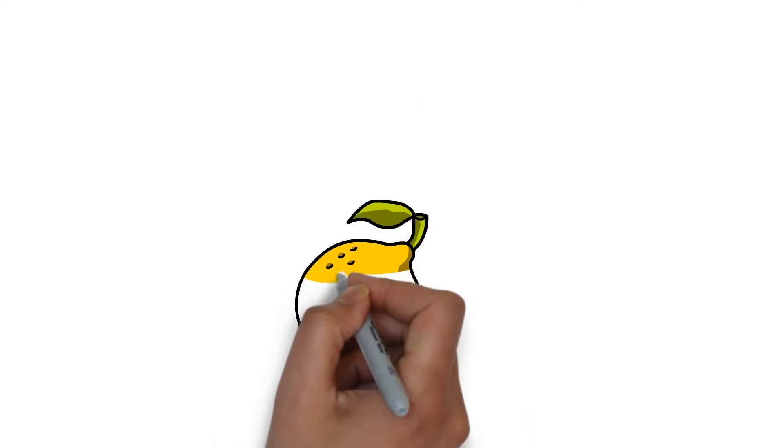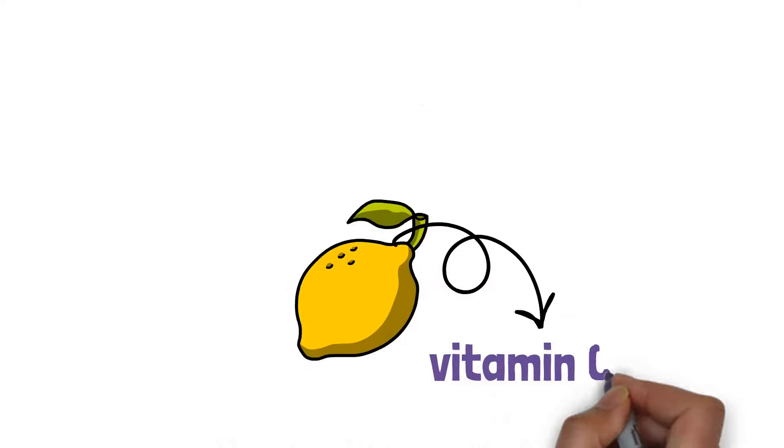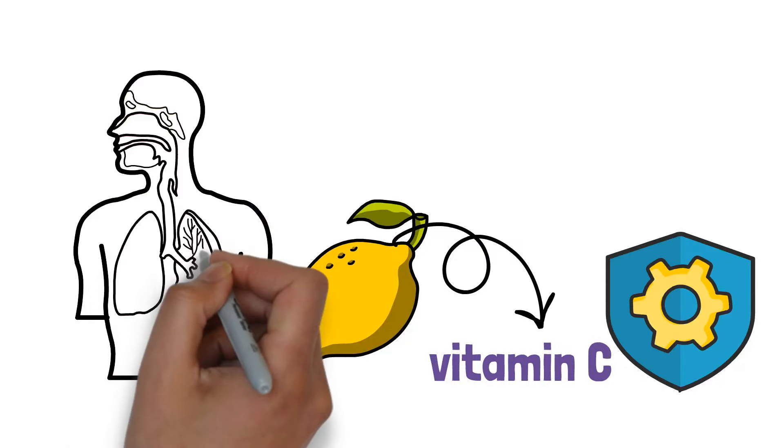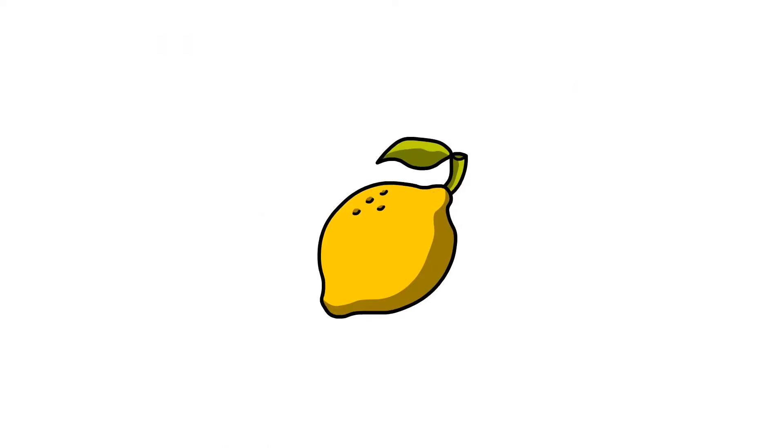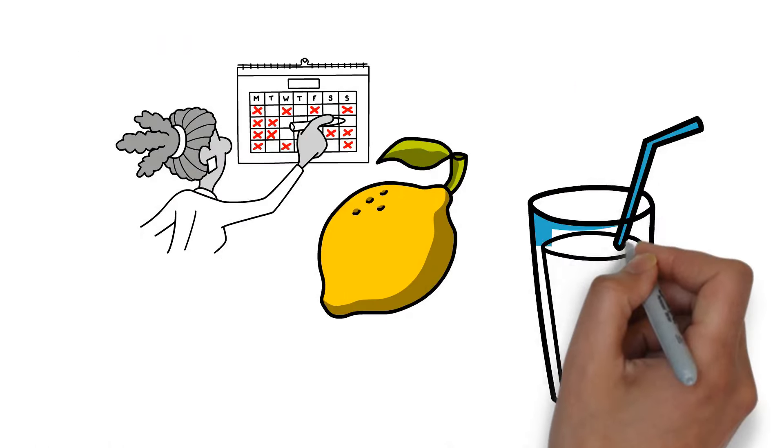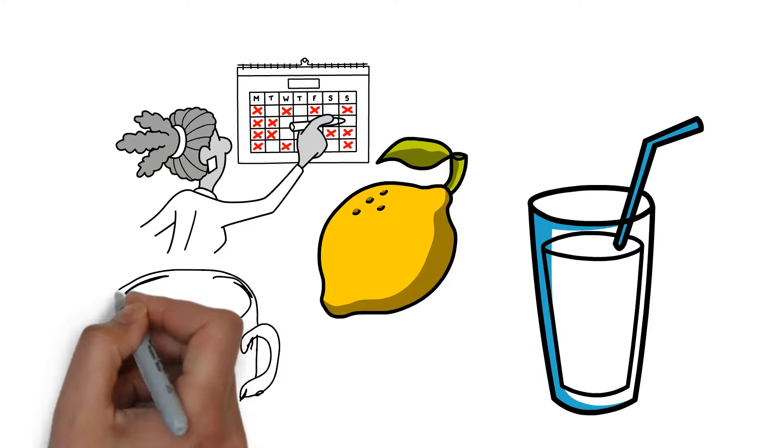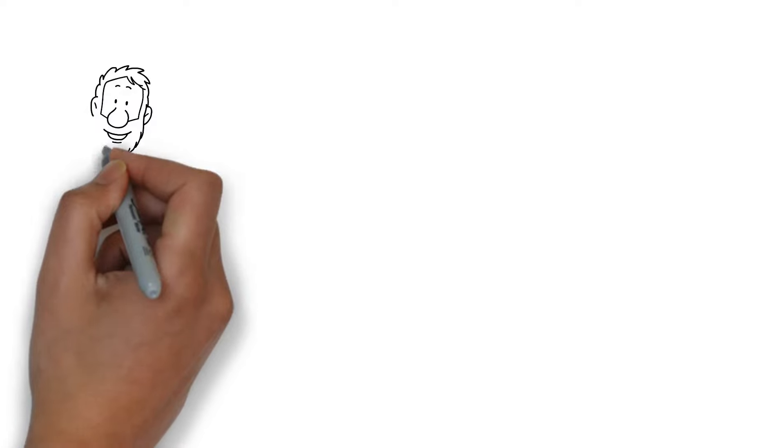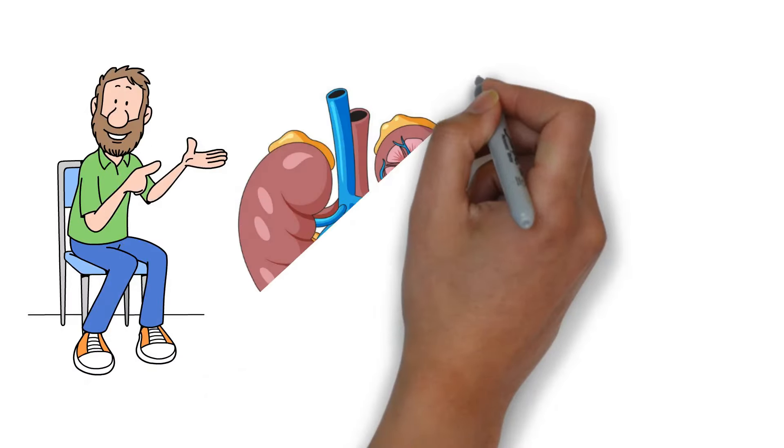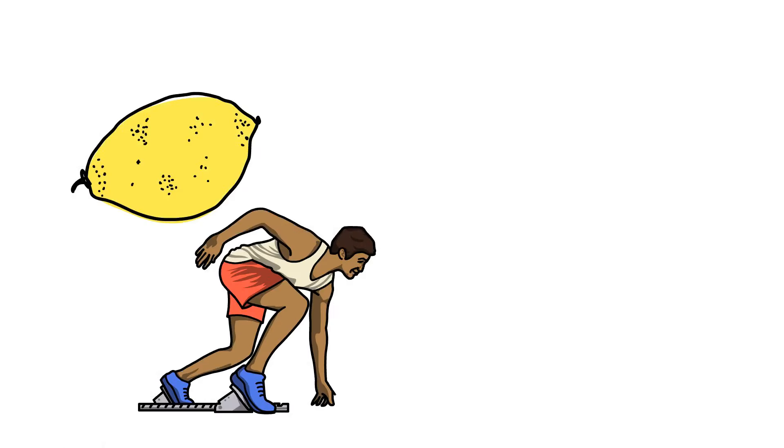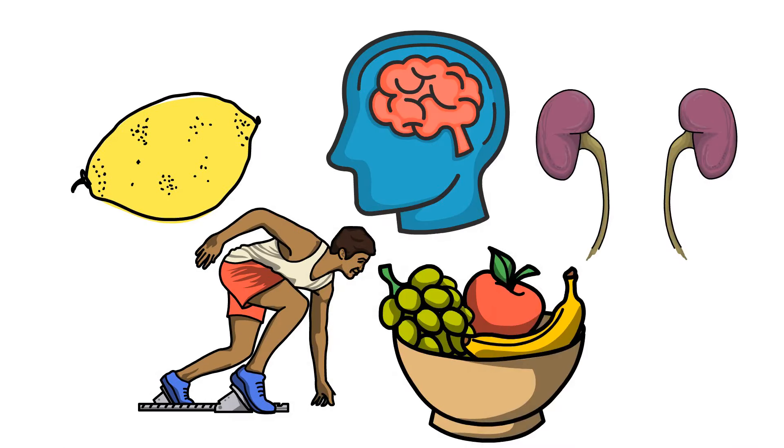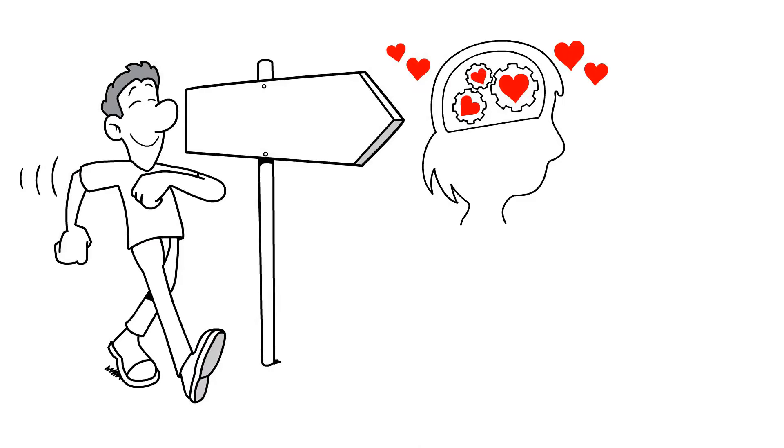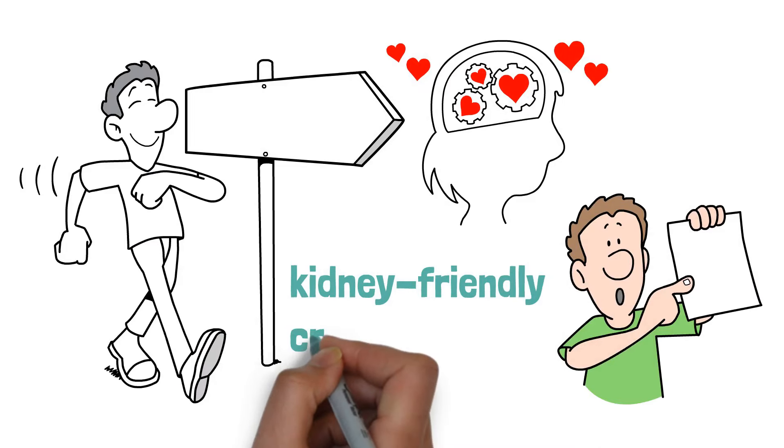But lemons aren't just a one-trick citrus. They're also packed with vitamin C, which is like a shield for your cells, protecting them from damage and supporting your kidneys in their filtering frenzy. Integrating lemons into your daily routine can be as simple as squeezing a wedge into your water, adding a slice to your tea, or zesting up your salads. It's an easy delicious way to say thanks to your kidneys for all their hard work. As we leave the lemony zest behind, get ready for another fruit that's not only sweet but also smart when it comes to keeping your kidneys in check. Up next, an everyday favorite that might just surprise you with its kidney friendly credentials.